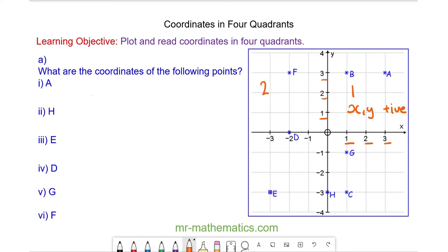The second quadrant is when the x values are negative and the y values are positive. Again, positive y but now we have negative x values.